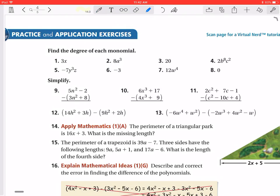All right, so I'm just going to do one through four on finding the degree of each monomial. Monomial meaning I only have one term.